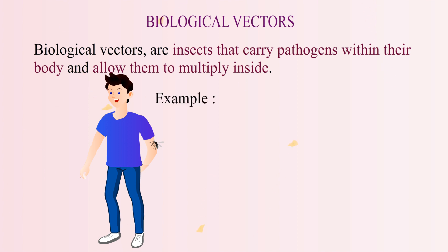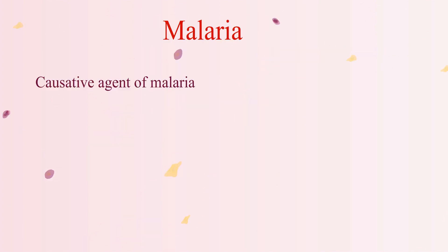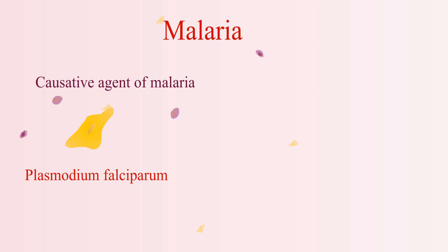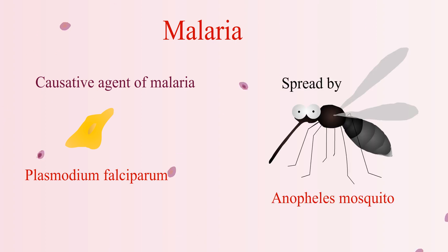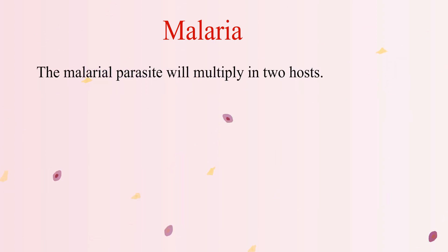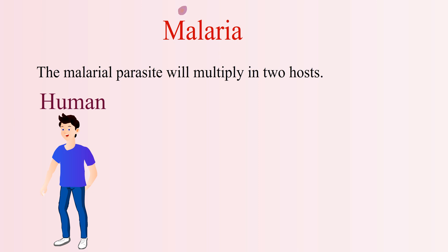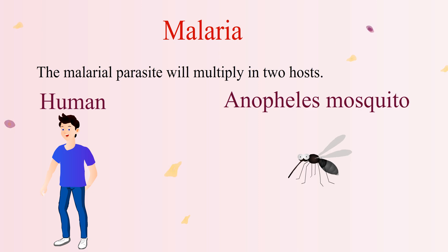An example of a biological vector is malaria. The causative agent of malaria is a parasite, which is spread by the Anopheles mosquito. The malarial parasite will multiply in two hosts: human and Anopheles mosquito.